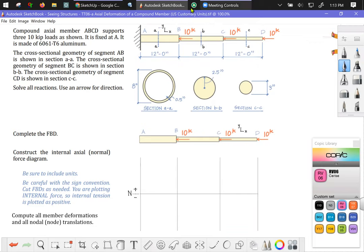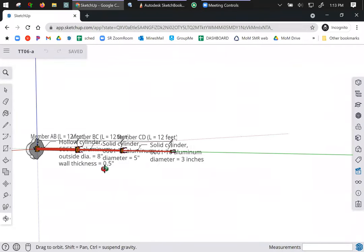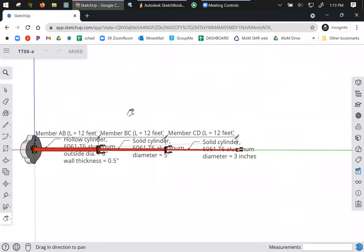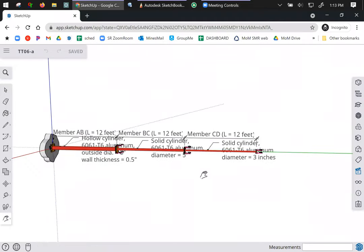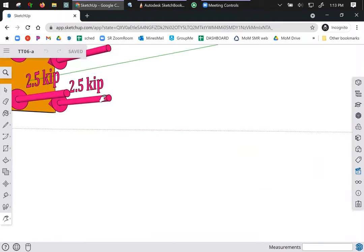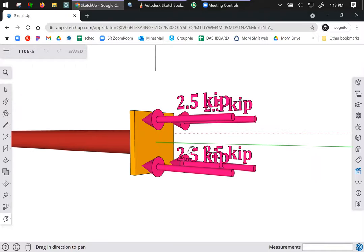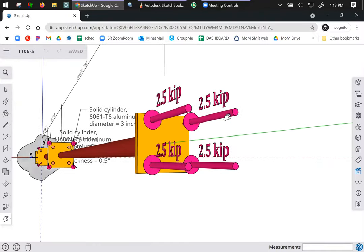I do have a CAD model for you, and it looks something like this. Let me zoom out. This one I modeled to scale, so it looks kind of longer and skinnier than my hand sketch, which is not to scale. And here at the end, we see how that 10 kip force could be applied. We don't really have context, but it could be four 2.5 kip forces shown as distributed here.